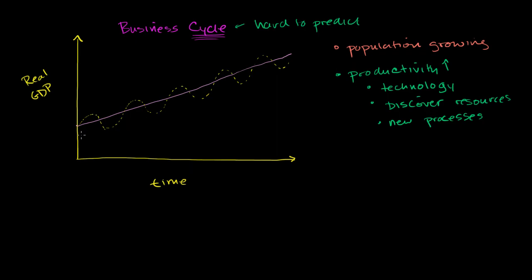And there are different terms for different phases of the business cycle. Over here, where the economy is growing, so the economy is growing from there to there, from there to there, we would call this phase of the business cycle expansion. Because the economy is literally expanding. There are more goods and services being produced in that economy.